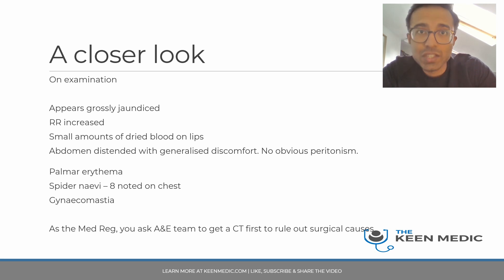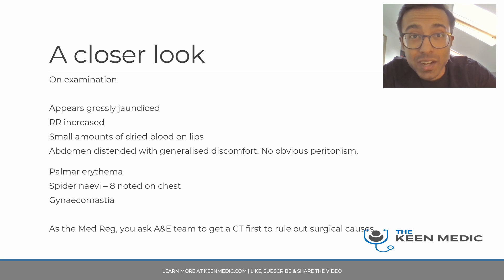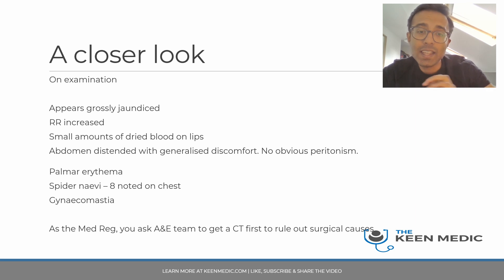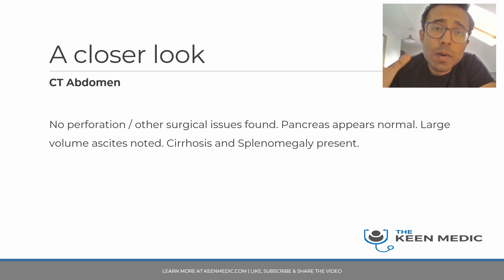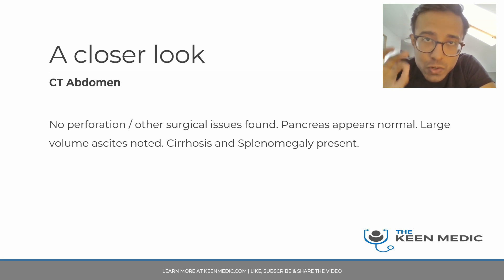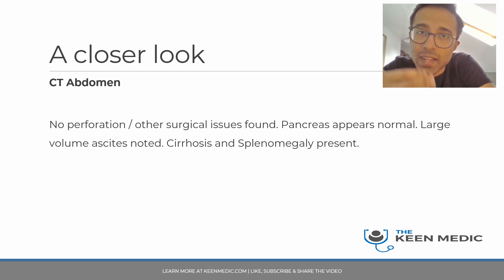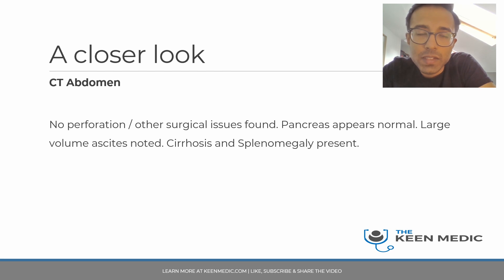As the medical registrar, before accepting the patient you ask the A&E team to get a CT abdomen to rule out any surgical causes. The CT report shows no perforation, no other surgical causes, the pancreas is fine, but there is large-volume ascites, established cirrhosis, and splenomegaly.